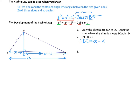I'm also going to let AD equal H for height. Now we have two right angle triangles, so we're going to work first in triangle ABD.